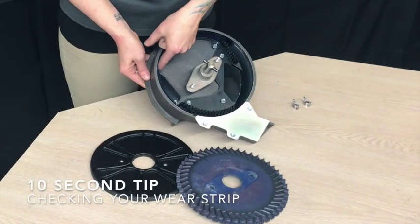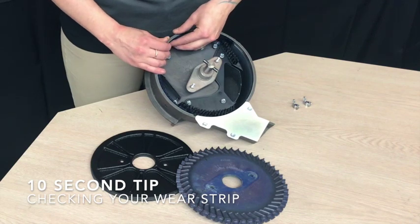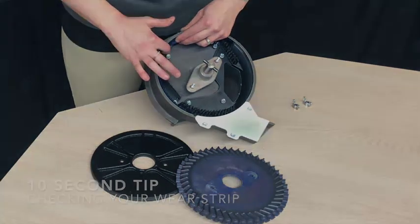Check your wear strip every once in a while to ensure that there isn't a groove that causes the meter to bind and the seed to get lodged in.